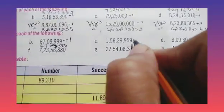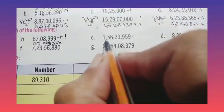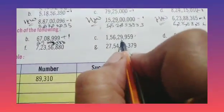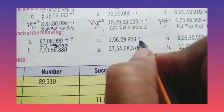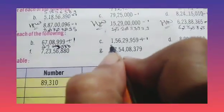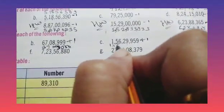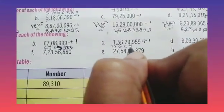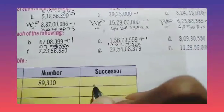Now part C is given: 1 crore 56,29,959. If we add one, it becomes 1 crore 56,29,960.